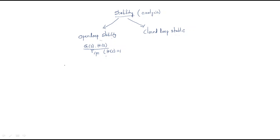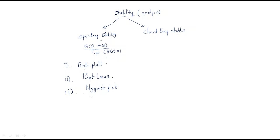In order to analyze open loop stability, we have different types of procedures. The first is the Bode plot procedure — using the Bode plot we analyze open loop stability. The second is root locus — using root locus we can also test the stability. The third is the Nyquist plot. These three are useful methods to test open loop stability.